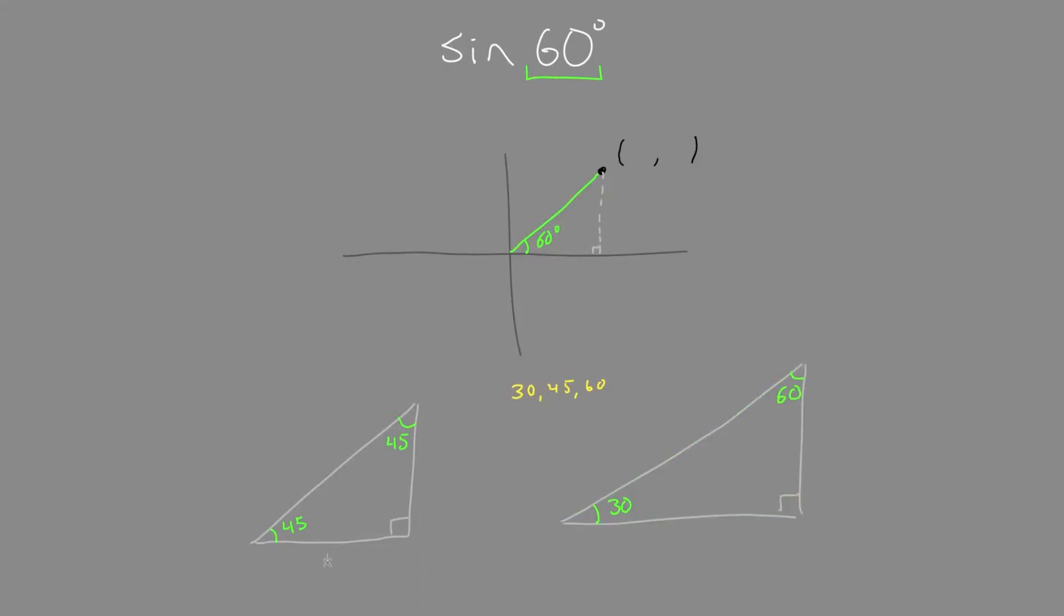So a 45 triangle would be the side length of 1 and 1. And the hypotenuse is the square root of 2. If we do the square root of 2 on the calculator, it's a little bit greater than 1.